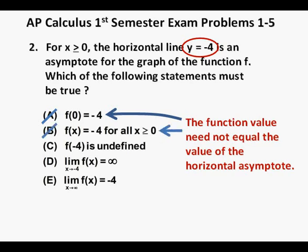And for answer choice b it's really kind of the same thing as answer a. The horizontal asymptote is not the value of the function but rather the value the function approaches as x approaches infinity or negative infinity. So we'll cross this off as well.